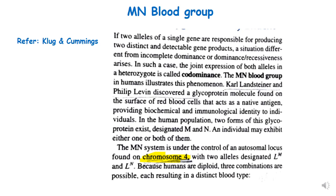MN blood group is an example of co-dominance, like we have discussed in ABO blood group. If two alleles of a single gene are responsible for producing two distinct and detectable gene products, this is called co-dominance. In such cases, the joint expression of both alleles in a heterozygote is called co-dominance. MN blood group in humans is an example of co-dominance.